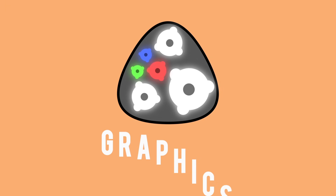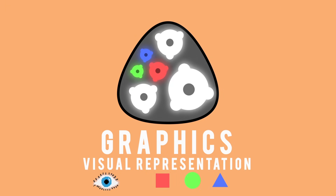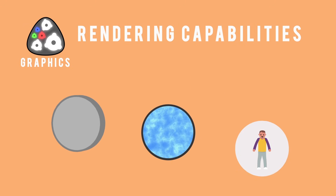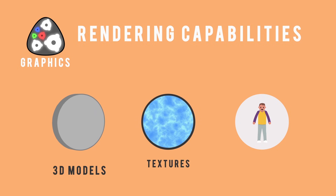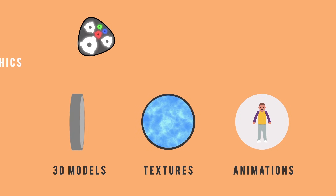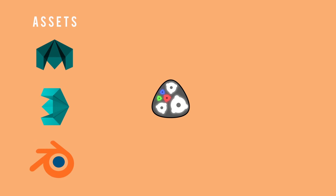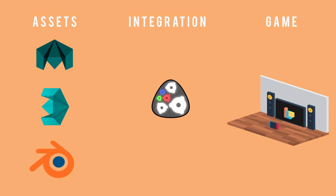Graphics, or the visual representation of the state of the game on screen, is a key feature of modern engines. Use of the rendering capabilities of the engine will dictate the appearance of the game. This can include the display of 3D models, textures, animations, and other varied asset types. It's common for artists to create these assets in separate applications like Maya, 3D Studio Max, or Blender, while the engine provides an integration pipeline that supports the file formats from those popular programs.